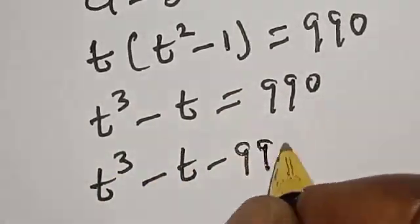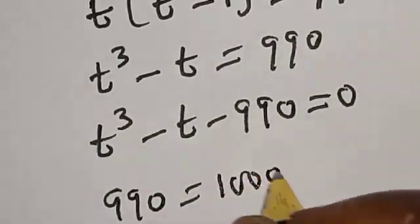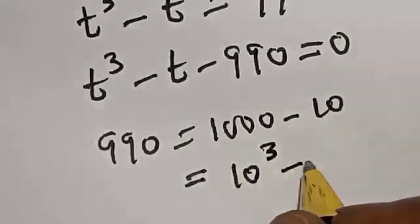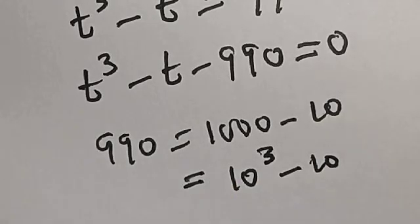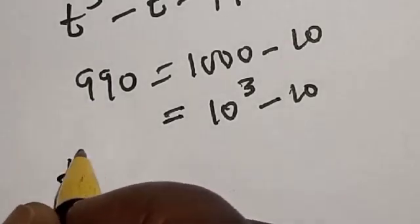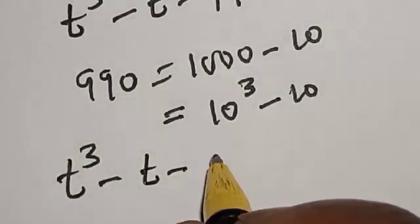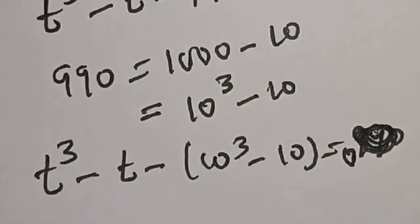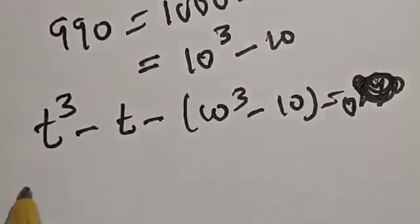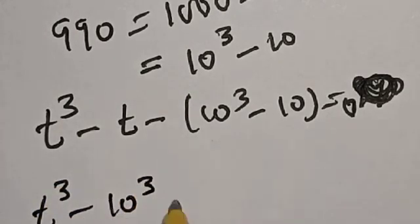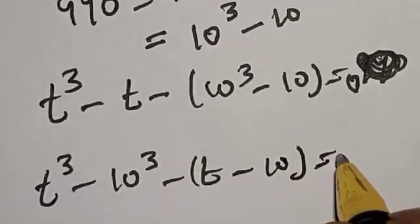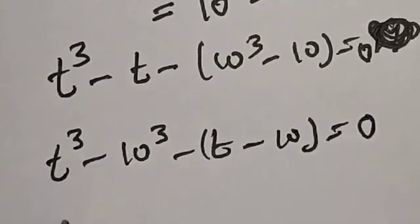Bringing everything to one side: t³ − t − 990 = 0. Now, 990 = 1000 − 10 = 10³ − 10. Substituting this, we get t³ − t − (10³ − 10) = 0, which rearranges to t³ − 10³ − t + 10 = 0.